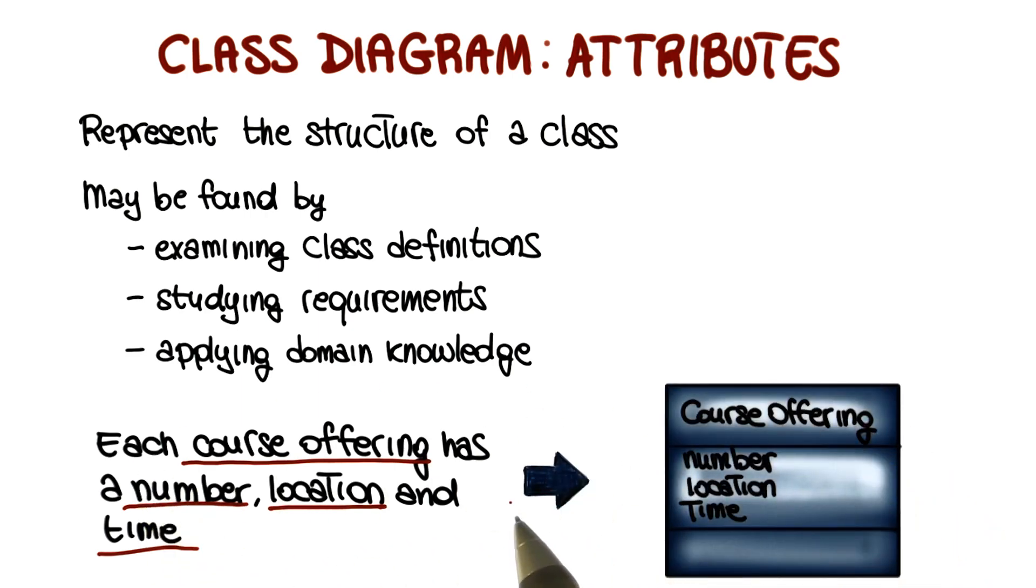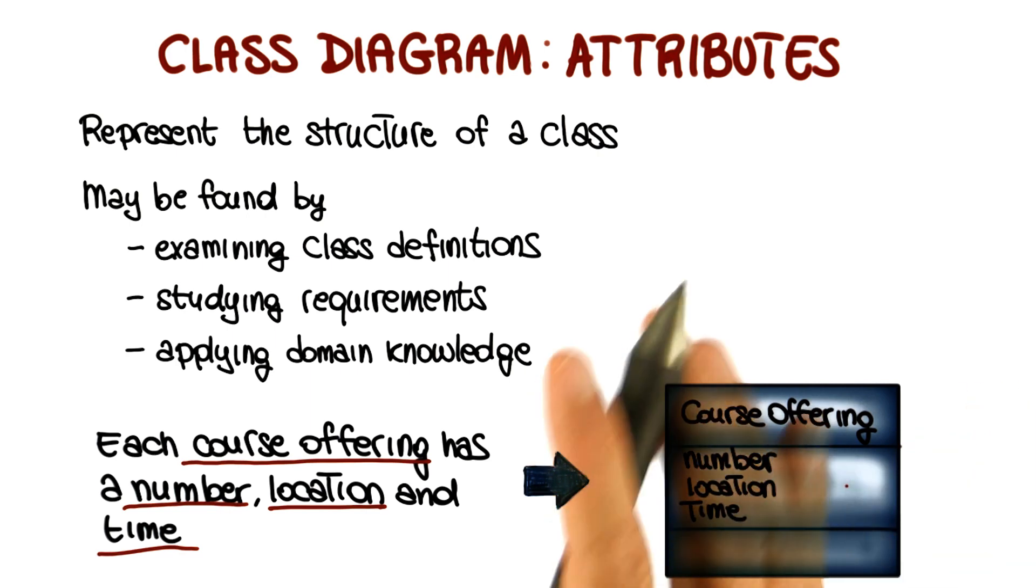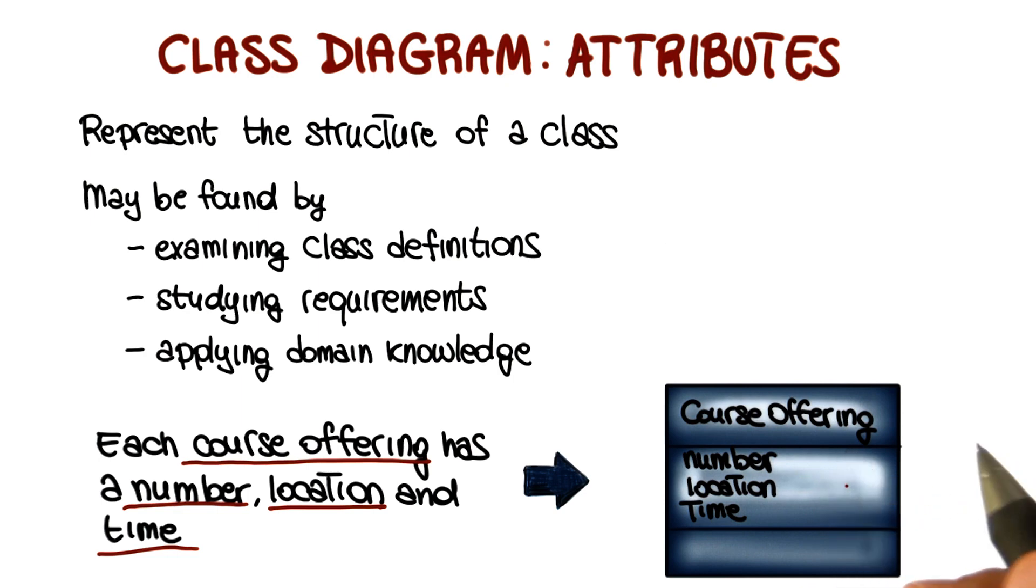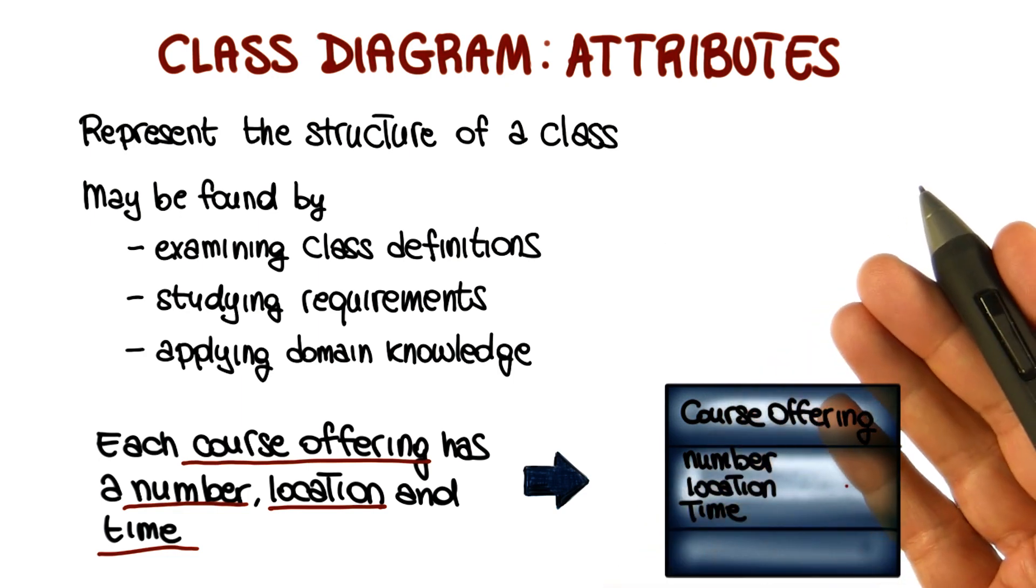So our class course offering, after this step of the analysis, will have three attributes: number, location, and time. And as you can see here, I'm not specifying the type or any additional information. So in this first step, I'm just interested in having a first draft of the class diagram that I can then refine in the next iterations of my analysis.